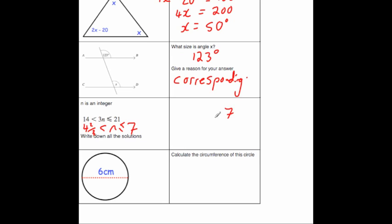Well, it's going to be 7, it'll be 6, and it'll be 5. So n equals 5, 6, or 7.